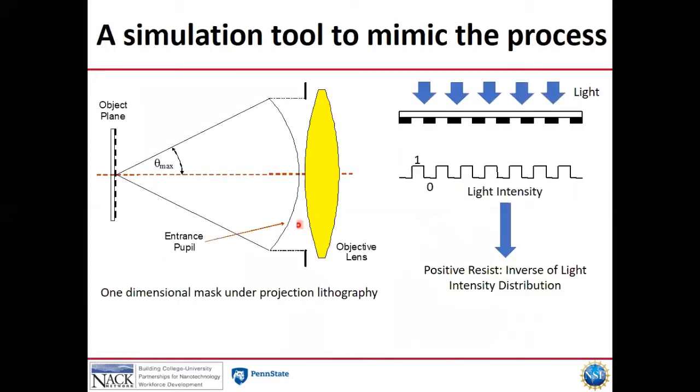Here is how the code works. A simple one-dimensional periodic mask is studied. Light is sent to the mask and we ideally expect digital-like information like output one under the apertures and zero under the masked areas. This slide is projected onto the photoresist with an optical lens in the framework of the projection lithography.